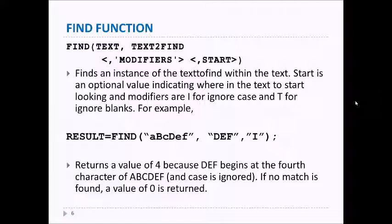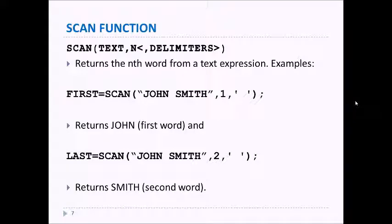The SCAN function returns the nth word in a text expression. For example, if I say SCAN of "john smith", comma one, comma blank, blank being the delimiter, it looks in john smith, finds the blank between john and smith, and returns the word john as the first word. If I use john smith with a two, same thing, it returns smith because smith is the second word.